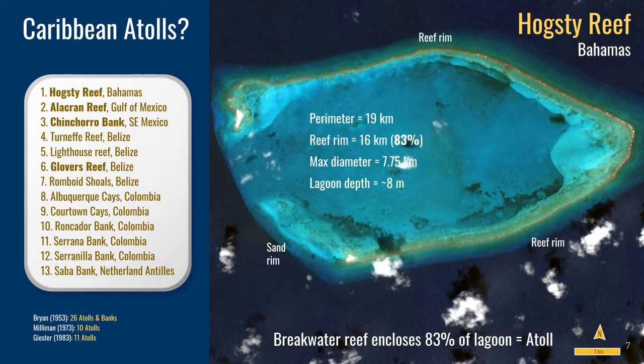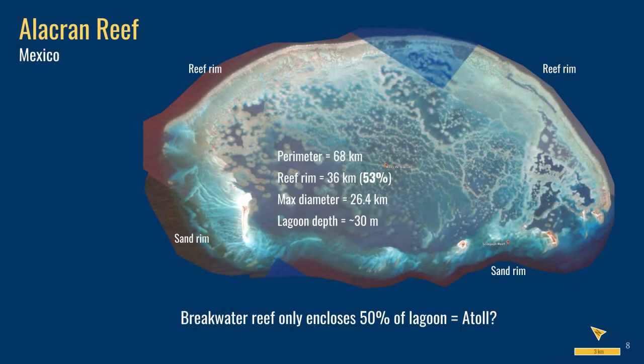Now let's compare this to four Caribbean examples that previous workers have claimed to be atolls: Hogstai, Alacran, Chinchoro, and Glovas. Hogstai Reef in the Bahamas has a breakwater reef rim enclosing 83% of the lagoon, forming a breakwater on all sides — very comparable to Indo-Pacific atolls. Alacranis on the Campeche Bank in the Gulf of Mexico has a reef rim forming only 53% of the perimeter, with the other sides rimmed by submerged sand banks and patch reefs, not a breakwater reef. I would suggest it's actually a barrier reef with an open, fairly deep lagoon.